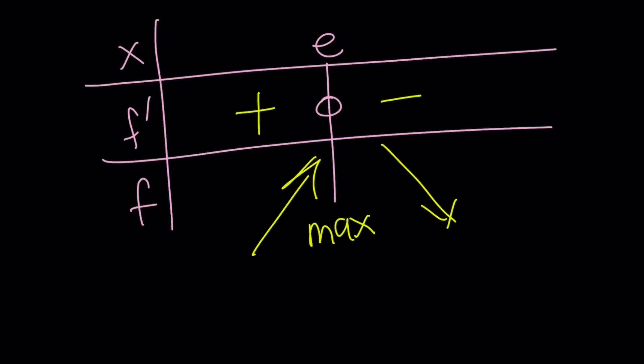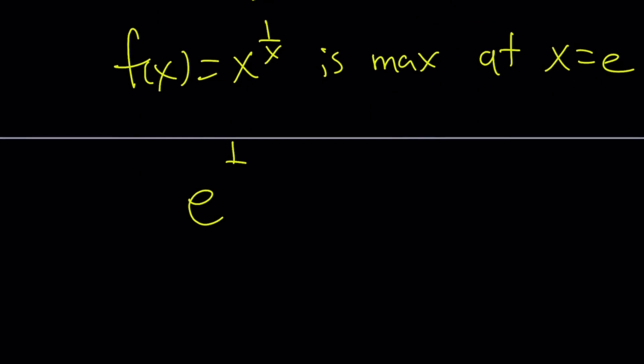Great. What does that mean? Our function f(x) equals x to the power 1 over x is max at x equals e, so e to the power 1 over e is the largest value it can ever take. Therefore, π to the power 1 over π has to be less than this number. So this is going to be the larger number if you're looking for the larger number.